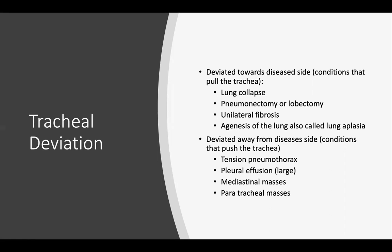When you suspect tracheal deviation, look for a possible cause. If the trachea is deviated towards the affected side, look for conditions that pull the trachea such as lung collapse, pneumonectomy or lobectomy, unilateral fibrosis, or agenesis of the lung (lung aplasia). If the trachea is deviated away from the affected side, look for conditions that push the trachea such as tension pneumothorax, a large pleural effusion, mediastinal masses, or paratracheal masses.